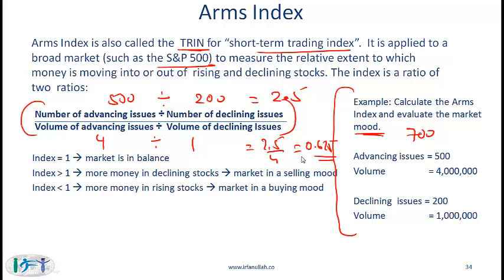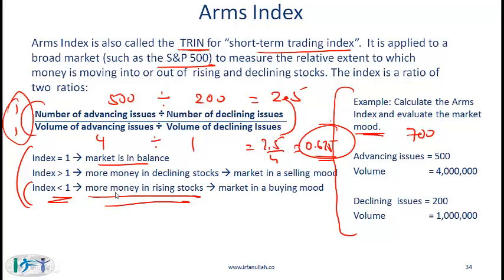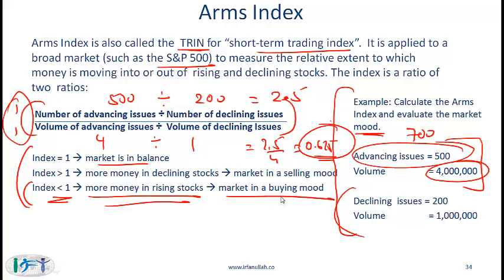An Arms index of 1 means the market is in balance. An index less than 1 — as in our example of 0.625 — means more money is flowing into rising stocks, so the market is in a buying mode. An index greater than 1 means more money is going into declining stocks, indicating a selling mode.